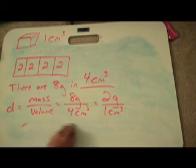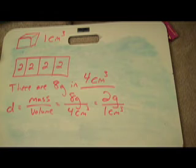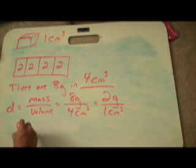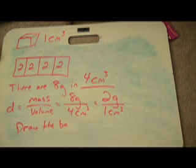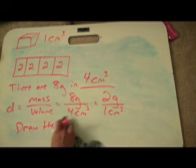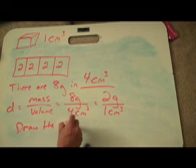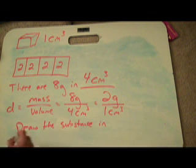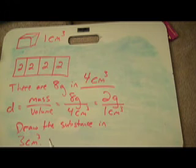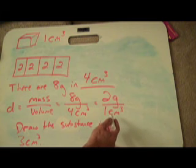And the last part of the problem, it asks, draw the boxes. So I draw a substance and I say this substance. And let's say 3 cubic centimeters. So if I want to draw 3 cubic centimeters of this substance, what I know about it is the density still stays 2 grams in every cubic centimeter.